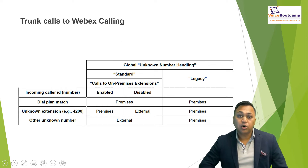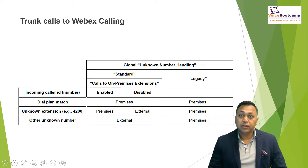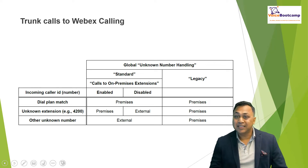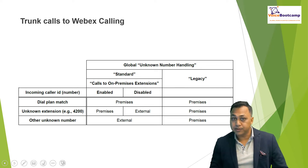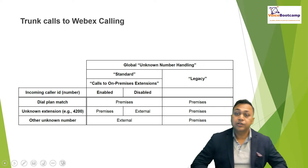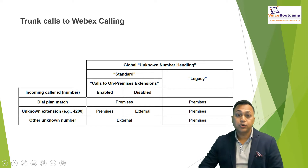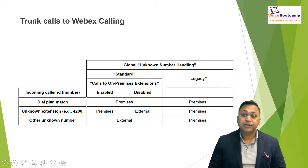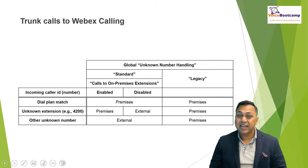When an inbound call from a local gateway requests privacy, it will assert an identity carried in the P-Asserted Identity header, or PAI. The PAI header is selected as the screened calling line identity if the header is present. If no privacy is requested, or privacy is requested but there is no PAI header present, then the presentation identity carried from the FROM header will be selected as the caller ID.